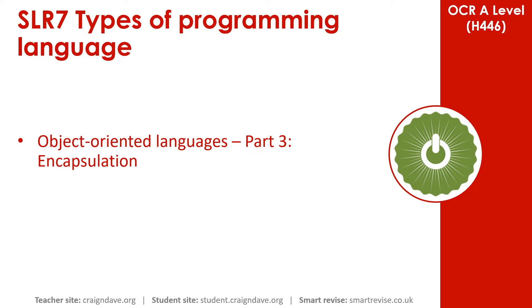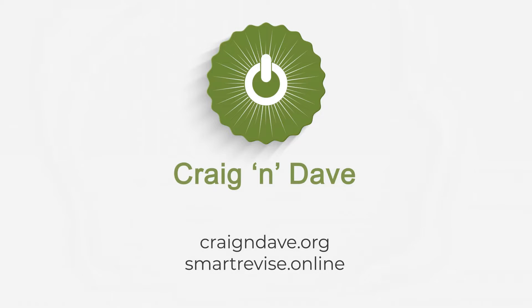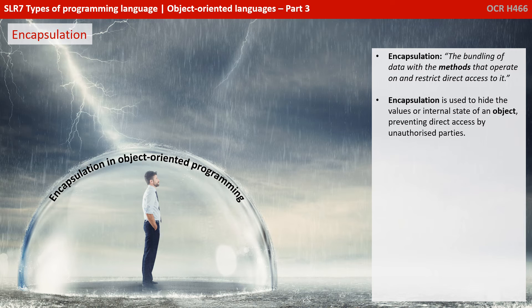This is part three of a four-part series on object-orientated languages. In this video, we talk about encapsulation. Encapsulation means the bundling of data with the methods that operate on and restrict direct access to it. Encapsulation is used to hide the values of internal state of an object, preventing direct access by unauthorised parties.